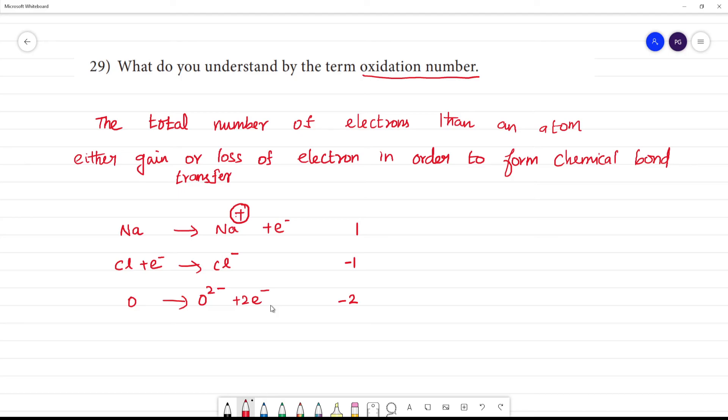The total number of electrons either gained, lost, or mutually shared is what we calculate as the oxidation number. Each element has a different oxidation number.